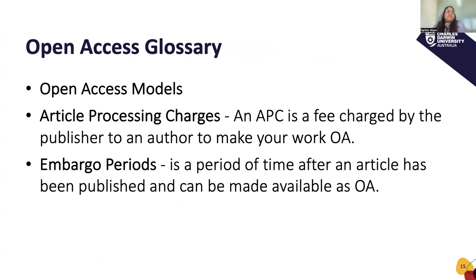A bit of open access glossary before we get started. Article processing charges (APCs) are a fee charged by the publisher to an author to make your work open access — this covers the indexing, formatting, and making sure your work is available to everyone. Another term is embargo periods — a period of time after an article has been published before it can be made open access. This depends on the publisher and journal, and embargo periods are usually 6 to 12 months.